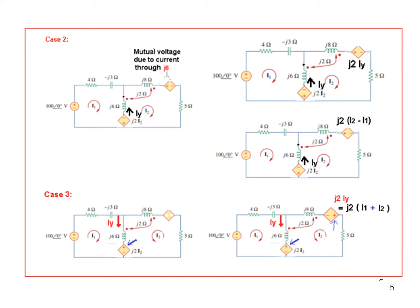Therefore, the dotted end will be positive. So this will be a change that now the positive will be at the top. But the value remains the same, J2 I2.